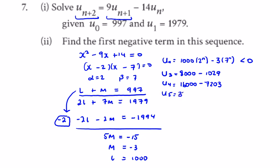2 to the power of 5 is 32, so 32,000 minus 3 times 7 to the power of 5 is 50,421. This is less than 0, so n equals 5 or the 5th term.